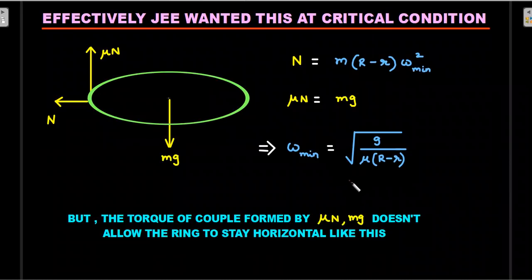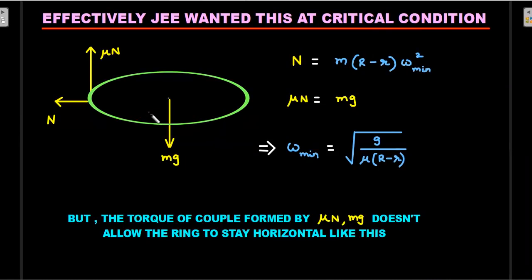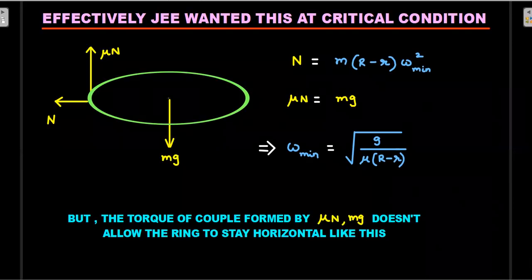Good students who understand torque will spot a problem: mu*N equals mg and mg together form a couple about the center of mass. An unbalanced couple means the ring will twist and cannot stay horizontal. Using the right-hand thumb rule, this couple produces a clockwise twist — the ring tends to rotate about its horizontal diameter. That unbalanced torque caused trouble for students trying to answer this question, and those students were actually right — this was a wrong assumption by IIT. Let's move ahead and sort things out.